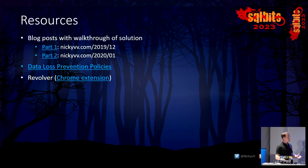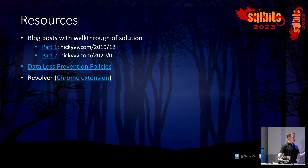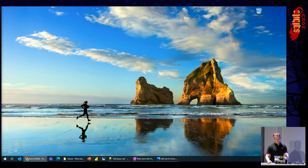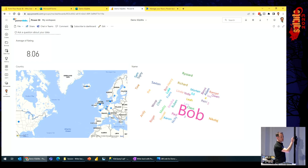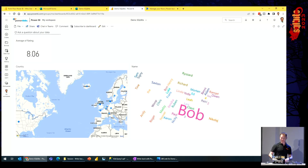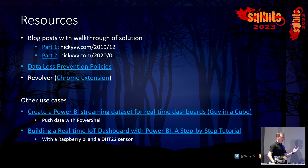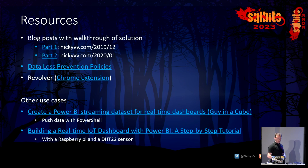A few resources I used — the blog posts explain in detail how I did this, if you want to look back at that. I also once used a Chrome extension to switch between tabs, cycling through the dashboard and my presentation slides automatically — a nice way of not having to switch manually. And there are some other use cases for connecting Power Platform products together, all linked to the Power BI Community website at community.powerbi.com.